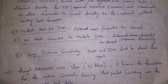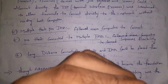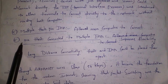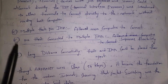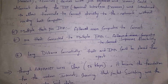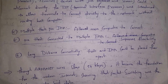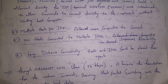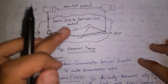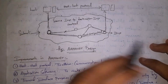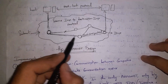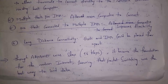The fourth improvement is multiple hosts per IMP — multiple computers can connect to a single IMP device. The fifth improvement is one host connected to multiple IMPs — if you want very fast communication, you can connect your system to multiple IMP devices so data transfers successfully even if one IMP device is damaged, as another IMP device will carry the data. The sixth improvement is long distance connectivity. There are multiple IMP devices in different locations and all these devices are connected to each other in order to send data.